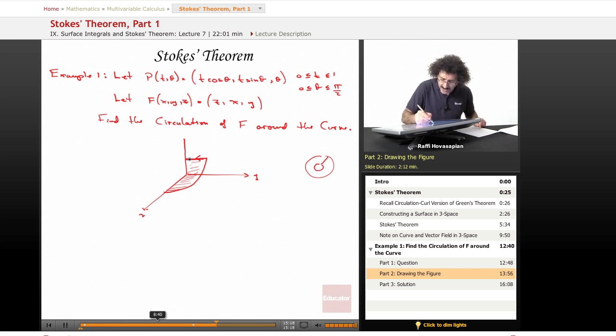The boundary actually has four parts. There is this curve C1, there is this curve C2, there is this curve which is C3, and there is this curve which is C4. Therefore, if I actually wanted to solve this, if I wanted to find the circulation of F around this curve, I have to parameterize four curves: C1, C2, C3, and C4.